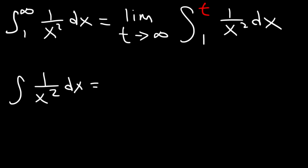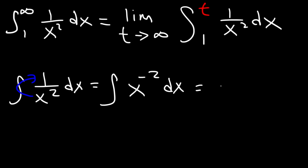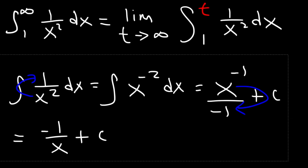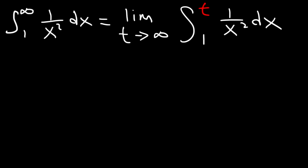Let's find the antiderivative of 1 over x squared. We need to rewrite it by moving x to the top, so it becomes x to the negative 2. Using the power rule for integration, we add 1 to negative 2 to get negative 1, then divide by that result. Bringing x back to the bottom gives us negative 1 over x plus C. So the antiderivative of 1 over x squared is negative 1 over x.